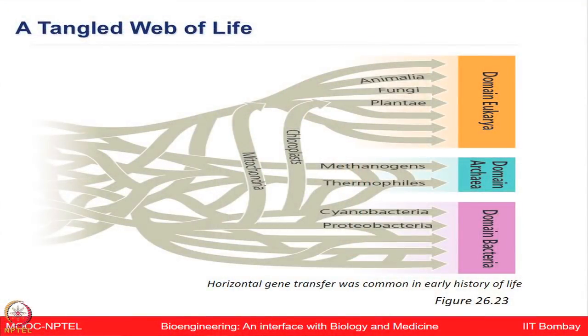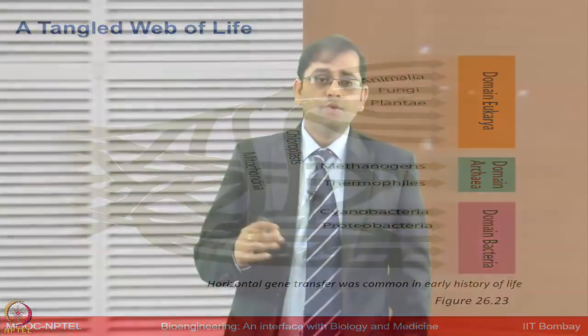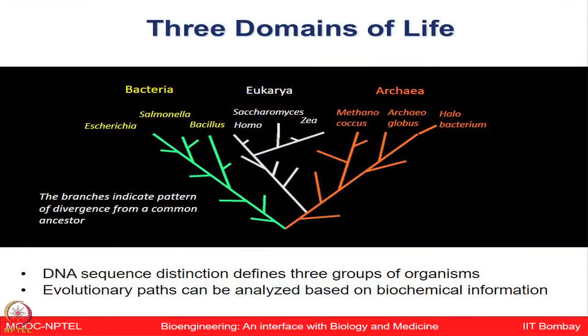The image shown is a tangled web of life depicting domain Eukaryota, domain Archaea, and domain Bacteria. It shows how from proteobacteria and cyanobacteria, more archaea and eukaryotes were generated, including methanogens, thermophiles, Animalia, Fungi, and Plantae, with horizontal gene transfer observed and chloroplasts and mitochondria playing important roles. Examples: Bacteria — Escherichia, Salmonella, Bacillus; Archaea — Methanococcus, Archaeoglobus, Halobacterium; Eukarya — Saccharomyces, Homo sapiens. Branching patterns indicate divergence from common ancestors defined by DNA sequences.